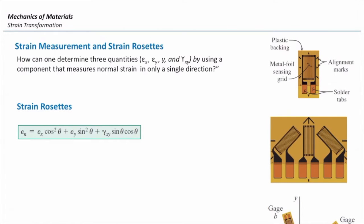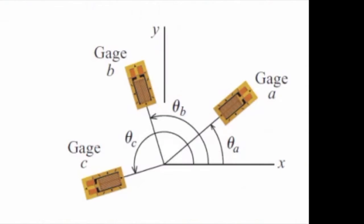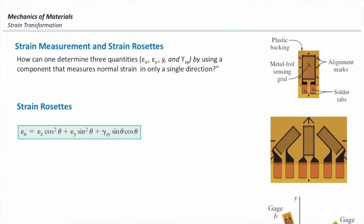Remember, strain gauges are only able to measure normal strains. We are not able to measure shear strain. So how can we determine shear strain at a certain point? One common practice is using three different strain gauges in different angles, then using some formulas to determine shear strains and normal strains in the x, y, and xy direction.